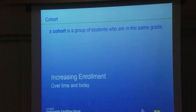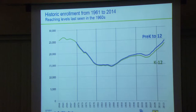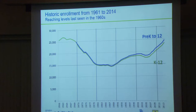Increasing enrollment. In terms of the way I use the term cohort, cohort refers to a group of students who are in the same grade. Here's our first graph that shows historic enrollment from 1961 to 2014, with lines breaking it up in 10-year increments or decades. In the 60s, APS had enrollment well above 25,000 students.